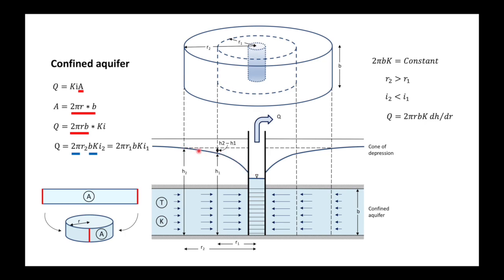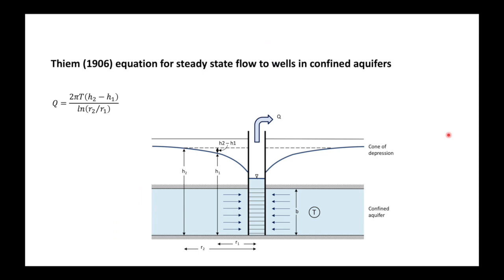Now our cone of depression is not a nice straight line, it's got a curve to it, so it gets a little bit more complicated and we have to write it in this differential form. After integration we end up with this equation, which is called the Thiem equation of 1906 for steady state flow to wells in confined aquifers.